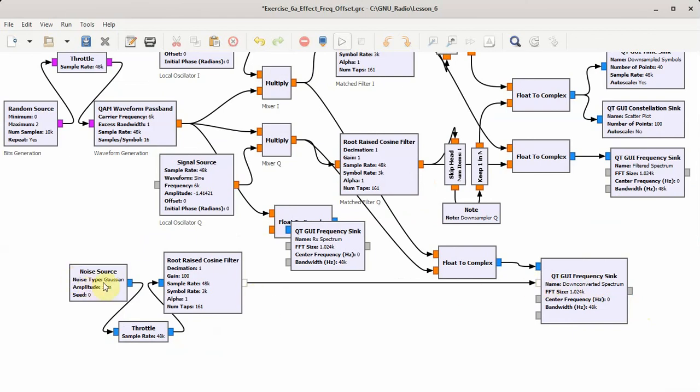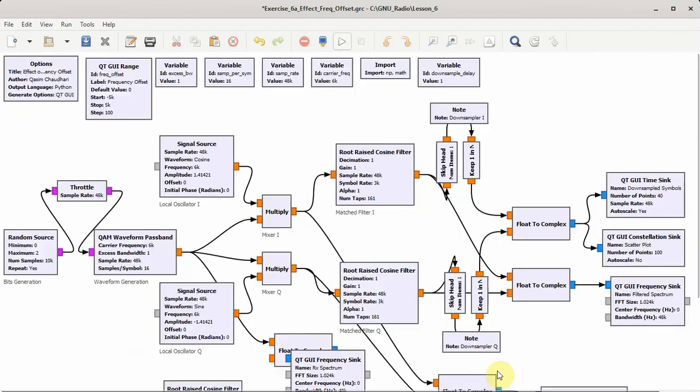Here we have a noise source because it has a flat spectrum and when this is given as an input to a root raised cosine filter we can clearly see the match filter spectrum along with the down-converted spectrum. This we will see when we run the flow graph. Finally, these are the match filter in I and Q arms.